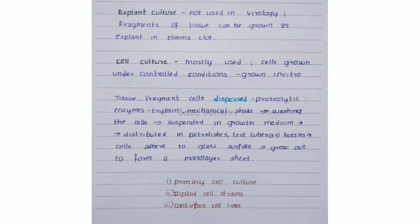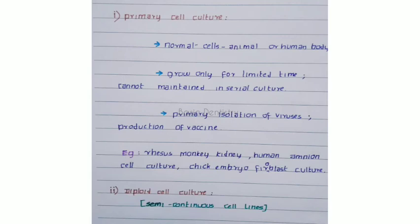There are three types of cell cultures: primary cell culture, diploid cell strains, and continuous cell lines. In primary cell culture, normal cells are taken from animal or human body. They grow only for a limited time and cannot be maintained in serial culture. They are used for primary isolation of viruses and for production of vaccines. Examples include rhesus monkey kidney and human amnion cell culture.